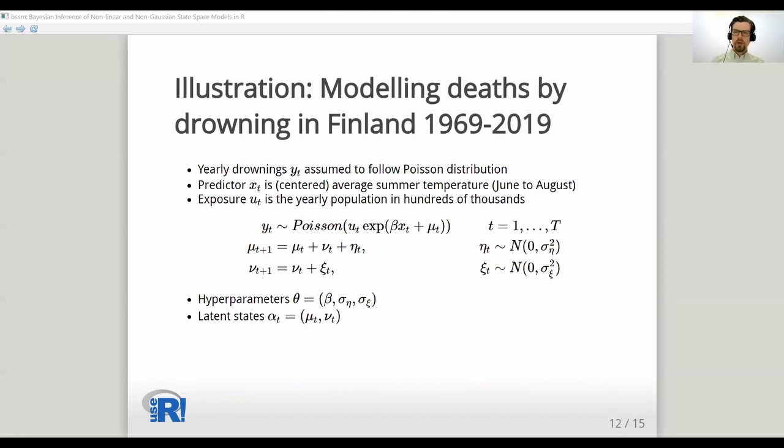Now as an example, I'll show how to analyze yearly drownings in Finland from 1969 to 2019. We have data on yearly drownings, which we assume follows Poisson distribution, conditional on the latent level mu, average summer temperature and yearly population. The latent process mu is assumed to follow random walk with a random slope. So we have three hyperparameters, regression coefficient beta, and two standard deviation parameters.